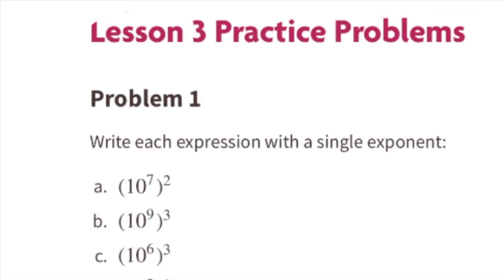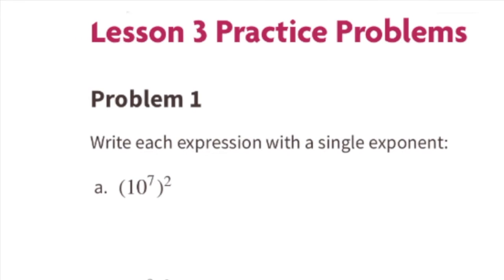Problem 1: Write each expression with a single exponent. Part A: 10 to the 7th power, all squared. That means 10 to the 7th times 10 to the 7th. Exponent 7 plus exponent 7 equals exponent 14. So 10 to the 7th power all squared equals 10 to the power of 14.